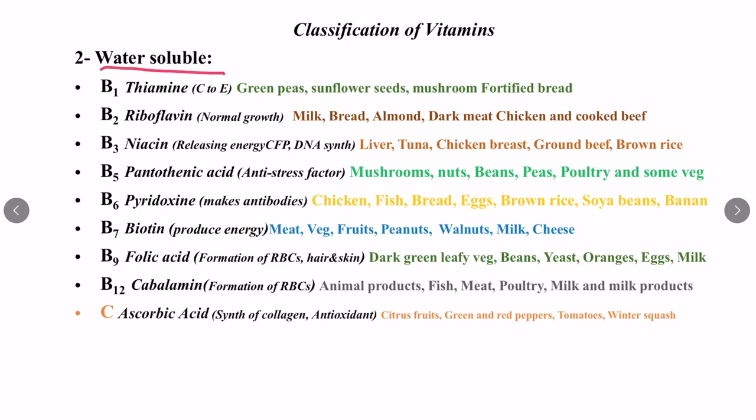Vitamin B1 is also called thiamine, and it is responsible for converting carbohydrates to energy. Sources are green peas, sunflower seeds, mushroom, and fortified bread. Vitamin B2 is called riboflavin and is responsible for normal growth. It is also called the beauty vitamin, so it is good for skin. Sources are milk, bread, almond, duck, meat, chicken, and cooked beef.